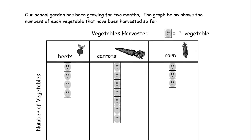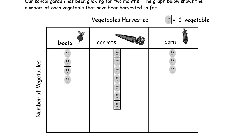Our school garden has been growing for two months. The graph below shows the number of each vegetable that has been harvested so far — those are the vegetables that have been picked. Each smiley face equals one vegetable. There are four beets, seven carrots, and three corn. You don't have to write those numbers down there, but you may find it helpful if you do.